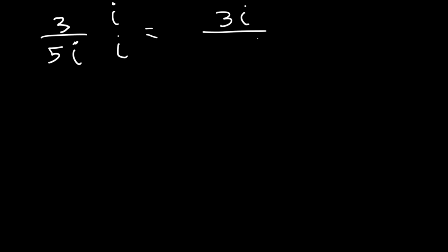So this is going to be 3i, but on the bottom, 5i squared. And 5i squared is negative 5. So this is the answer. It's negative 3 over 5 times i. So now it's in standard form.